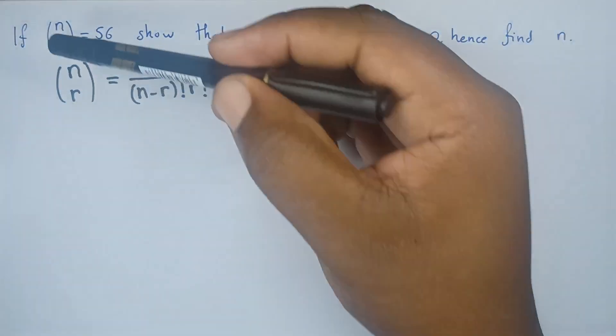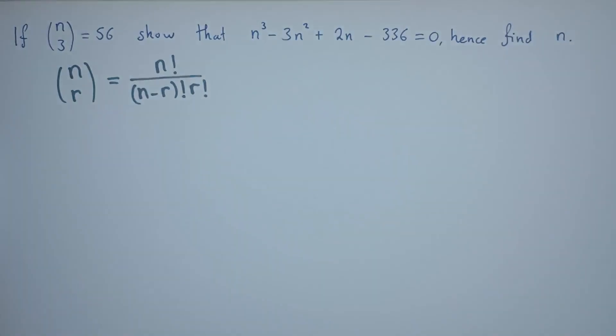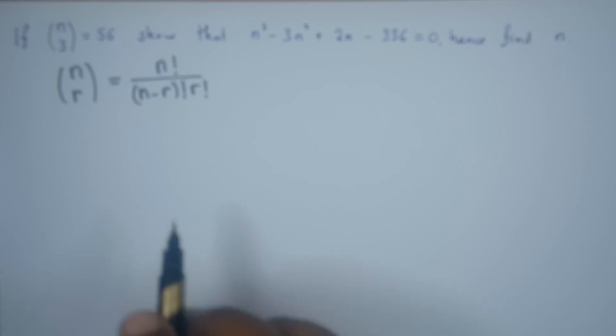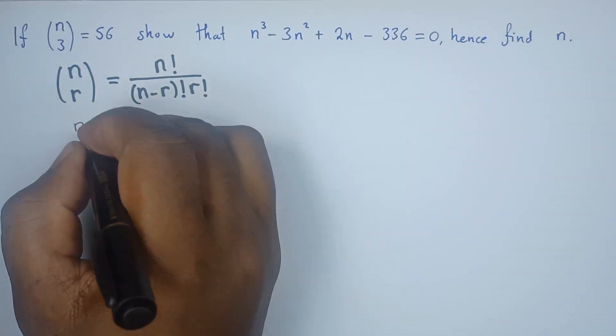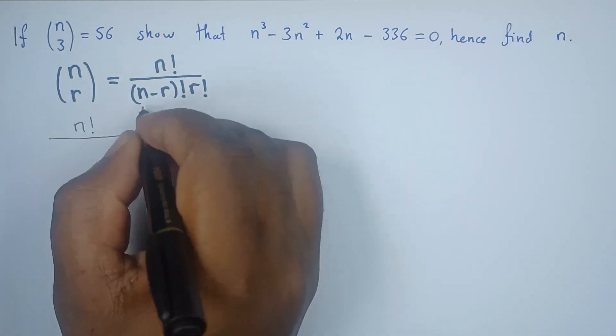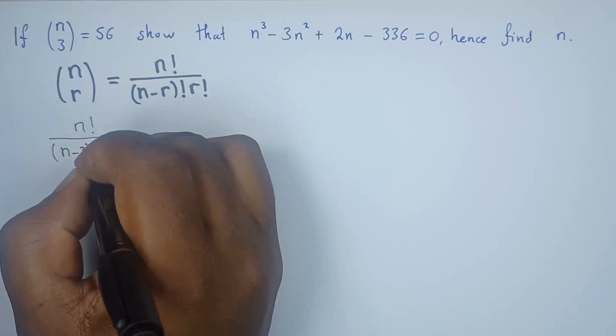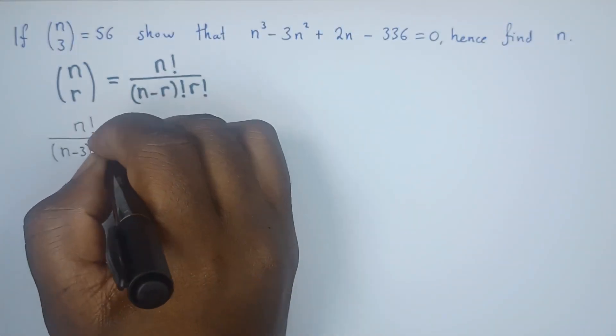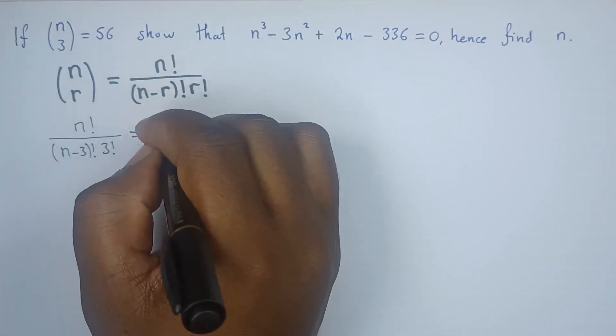So in our equation, the value of n is still n, but the value of R is 3. So let's do the substitution. This will be n factorial divided by (n-3) factorial times 3 factorial. Now remember, all this equals 56.